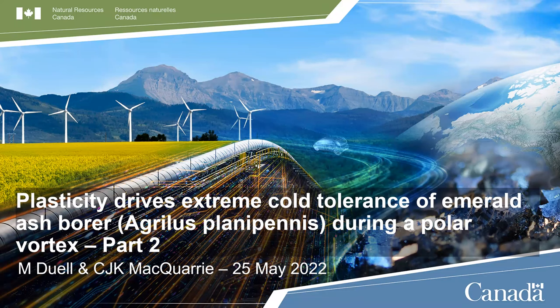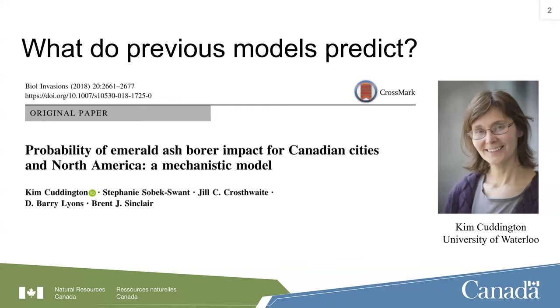Megan did a really great job talking about what we found in Winnipeg. The big finding is that those bugs can obviously take a lot more cold than we had expected based on the previous data that Brent Sinclair's lab collected in London at the start of EAB infestation. The next question is: what are the implications for EAB in Canada and certainly in Western Canada? How does that change our predictions of what the risk is to that part of Canada and the ash resource there? Let's briefly jump back and look at what those previous models predicted based on that original data from London. This is Kim Cuttington's work at the University of Waterloo.